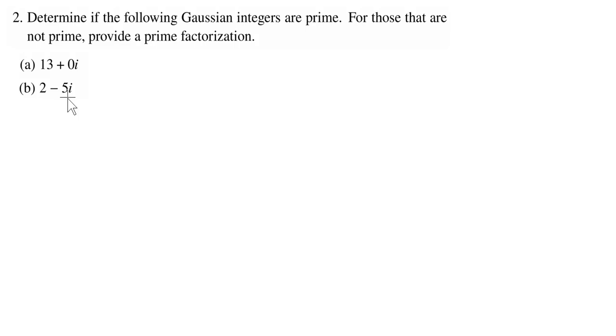The key that we will use to unlock everything here is this norm map. Recall that the norm of a Gaussian integer a plus bi is a squared plus b squared.